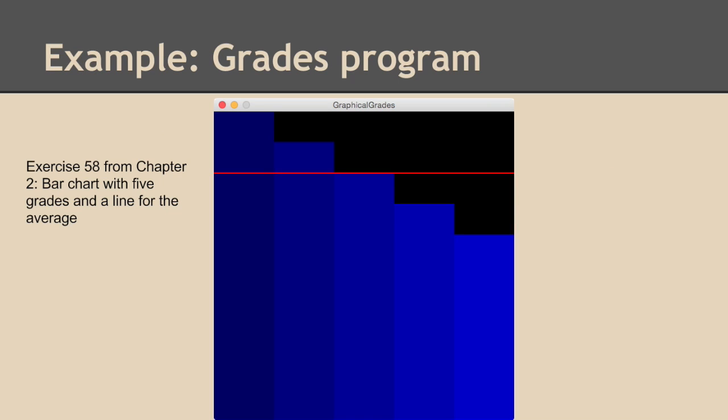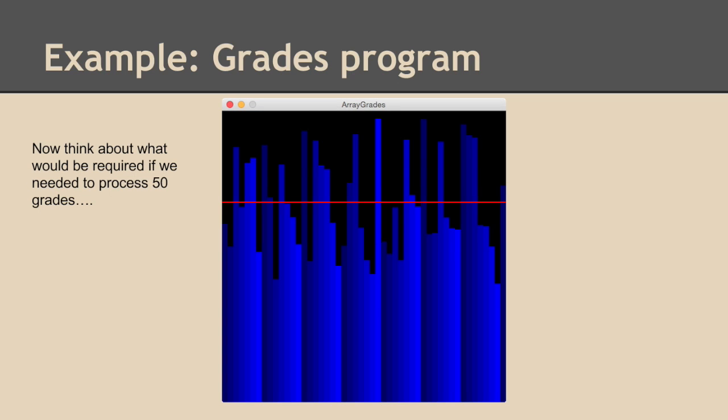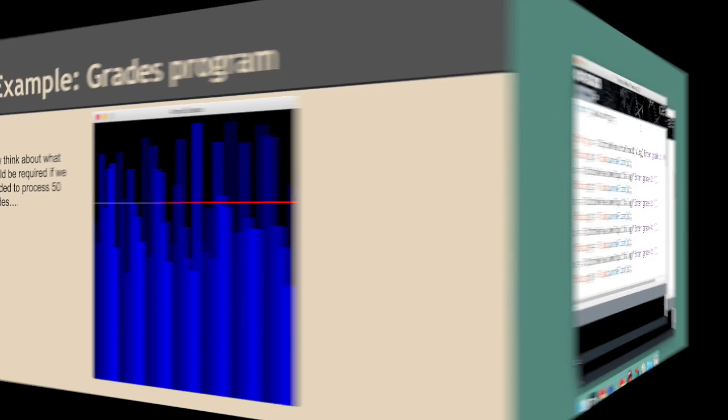You may have done this exercise back in chapter two, where you drew a bar chart with five grades and a line for the average. So that was not a very difficult program. It was chapter two in the book after all, so it was pretty early on. But if you did that exercise, think for a moment on what you would have to do to change it if you wanted to process 50 grades instead of just five. And let's take a look at those two programs, the five grades and the 50 grades, and see how those are different, just to get a feel for how arrays help us out.